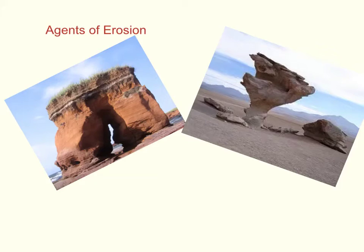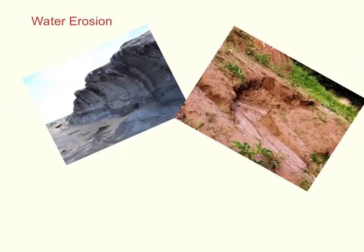In this presentation, we will talk about erosion. In the first picture, you can see that the water over time smashed against the wall and the water carries away particles of the sand and the rock. Eventually, it erodes the rock, making a wave imprint.